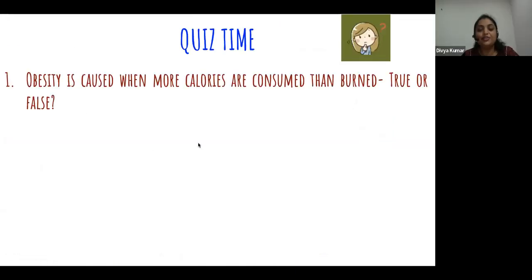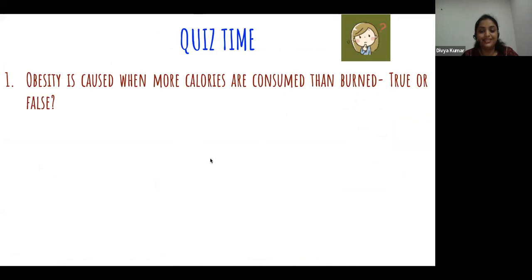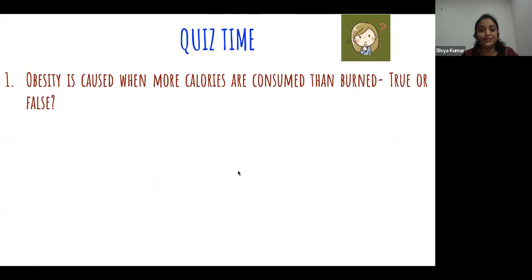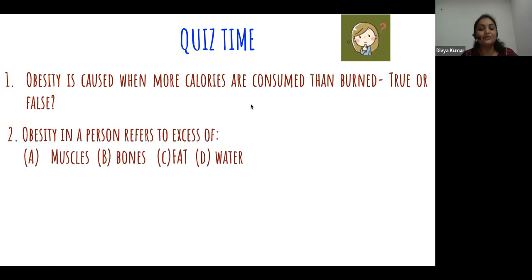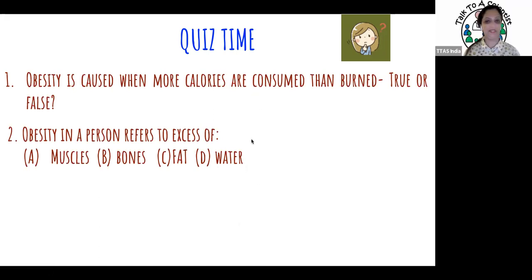Quiz time: obesity is caused when more calories are consumed than burned - agree? Yes, the answer is true. Next question: obesity in a person refers to excess of muscles, bones, fat, and water. All of you answered correctly - well done. The answer is fat. One pound of fat equals how many calories - just a wild guess? Somebody guessed 3,500 - you're right! One pound of fat equals 3,500 calories. Imagine, if you have to burn one pound of fat, you have to burn out 3,500 excess calories. Eating and gaining weight is easy, but losing weight is the most challenging part. We need a calorie deficit of 3,500 to lose one pound of fat.